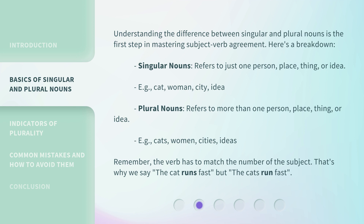Plural nouns refer to more than one person, place, thing, or idea. For example: cats, women, cities, ideas. Remember, the verb has to match the number of the subject. That's why we say 'the cat runs fast,' but 'the cats run fast.'